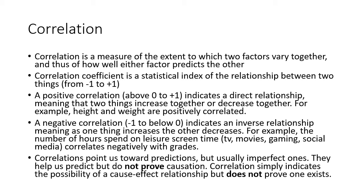If a study shows a 0.85 positive correlation coefficient between two variables, that's telling you there's a very strong relationship. One example relevant to college students is the amount of time spent studying and grades — that has a very high positive correlation. The more time spent studying, the higher the GPA.